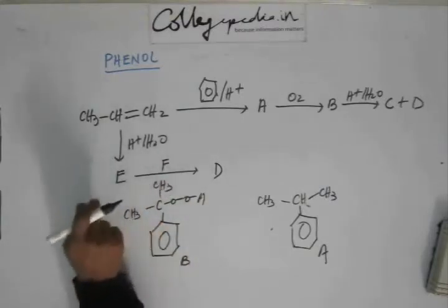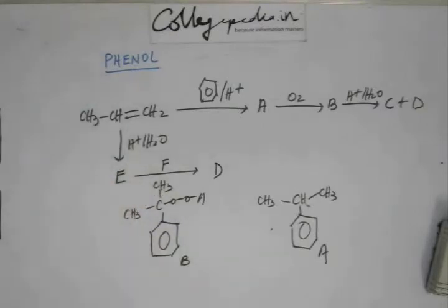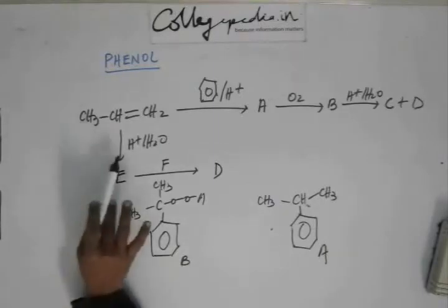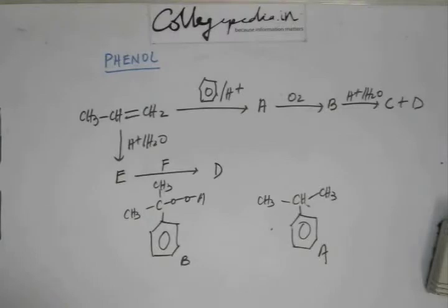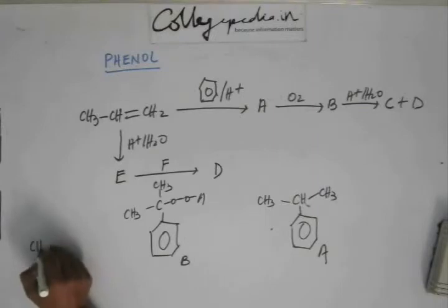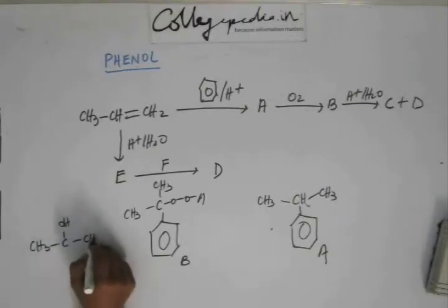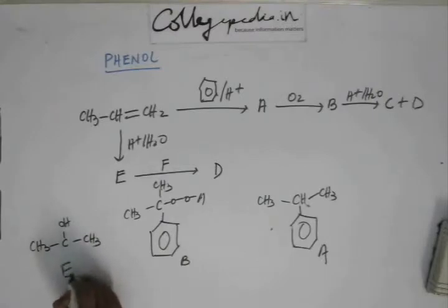If you add H+ H2O, this is basically hydration reaction. We studied this reaction when we studied the reactions of alkene. So this is something we know from the past chapter. This hydration of this alkene will occur and this E will be alcohol. And the hydration will be as per Markovnikov addition. So E will be 2-propanol. This is E.